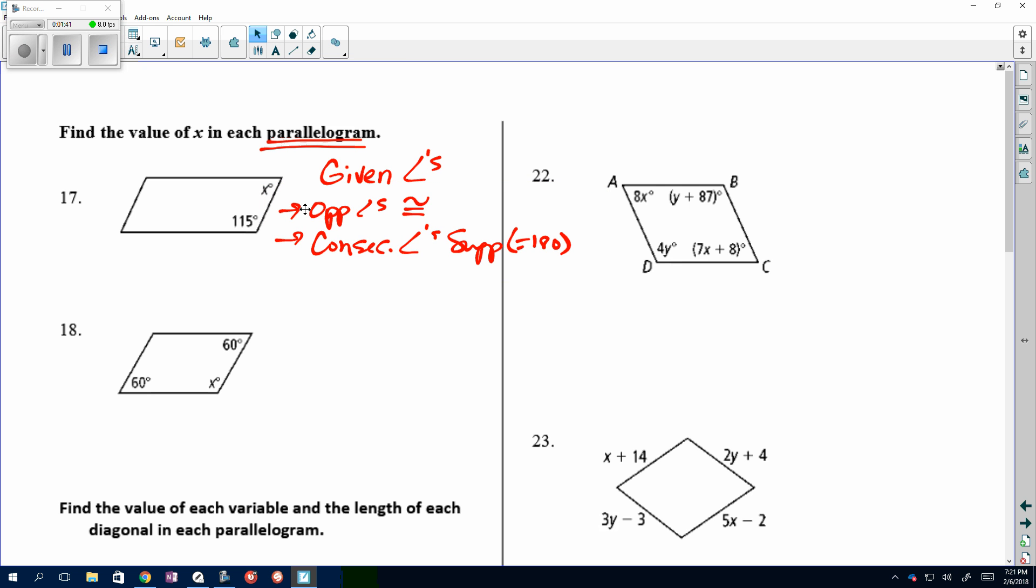If I look here, do I have any opposite angles? No, I don't, but I can label it if I want to. So, what I have are consecutive angles. These X and 115 are supplementary, which means they equal 180. Consecutive means they come right after each other. So, I can use that to find our missing angle here. Of course, subtract the 115, and we see that X is 65. So, try number 18. 18 is very similar to what we just did on number 17.